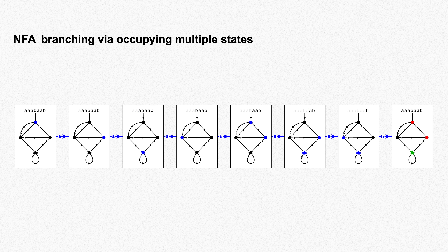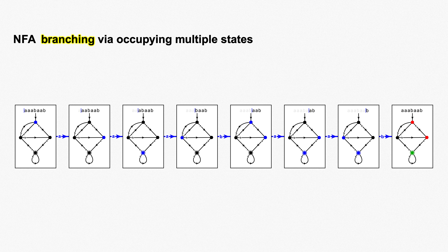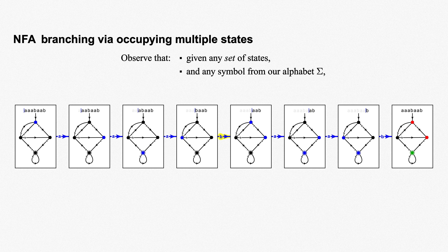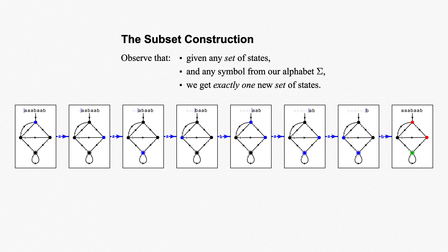It bears repeating that this trick of simply occupying multiple states in the NFA is possible only because the different branches differ only in the state occupied. We won't be so lucky with other types of machines, and for them we'll have to return to our original perspective of cloning copies of a machine's configuration. The net effect with NFAs is that everything that non-determinism allowed in terms of branching can be captured on a single diagram by occupying multiple states. Given any set of occupied states and any symbol from our alphabet sigma, we get exactly one new set of occupied states — exactly our condition for a deterministic finite automaton, but for sets of occupied states. This results in what's called the subset construction, which allows us to convert any NFA into a DFA that replicates its behavior.